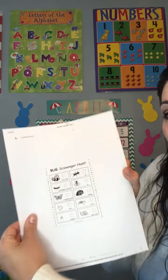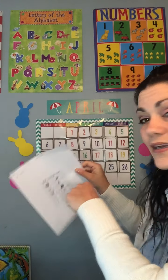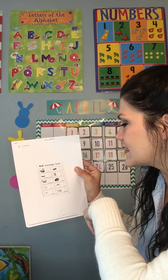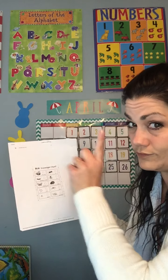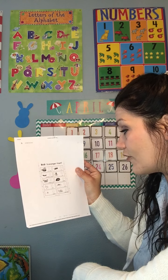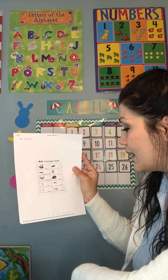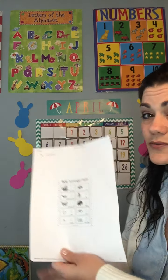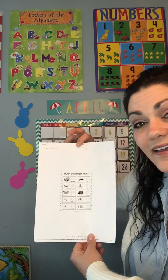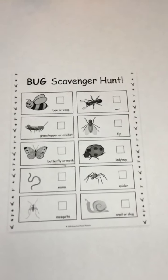We also have a bug scavenger hunt. Let's go over it for friends that don't have the email. We're going to be looking for this checklist in our backyards or front yards with our parents, of course. You can find a bee — don't try to catch or grab them — or a wasp, because they could sting you. Also a grasshopper or cricket, butterfly or moth, a worm, a mosquito, an ant, a fly, a ladybug, a spider, a snail or a slug. These will be pretty easy to find, at least some of them. You may not find them all in one day — maybe take a couple of days to keep marking off your different bugs. You can draw your own if you're unable to print the email or find the link.